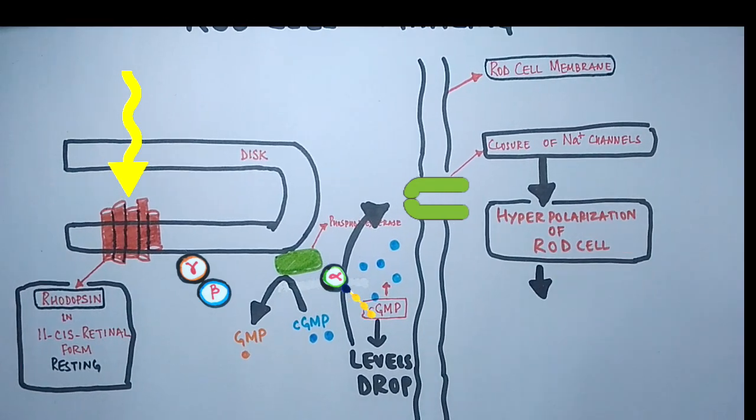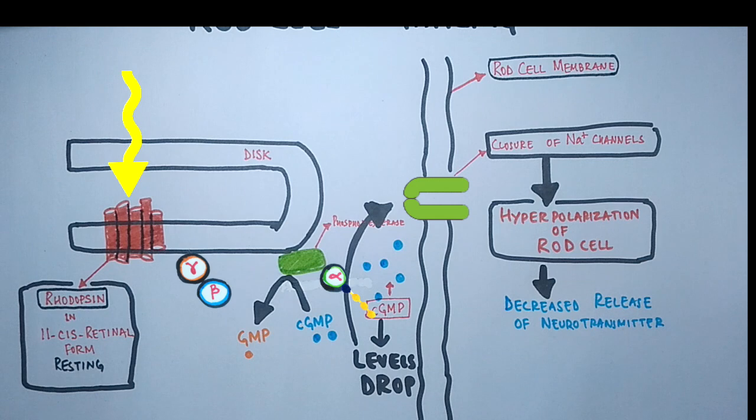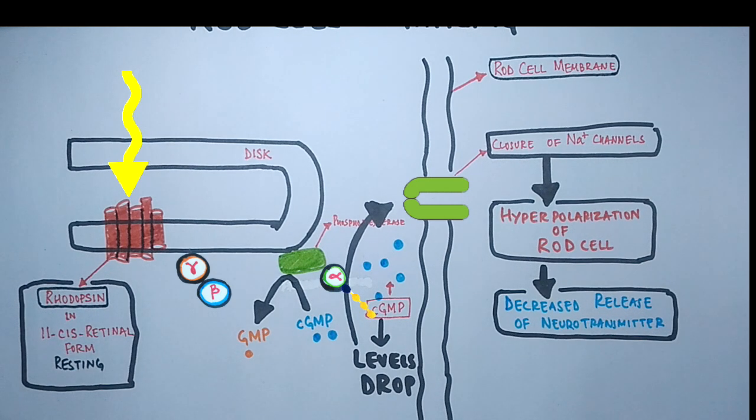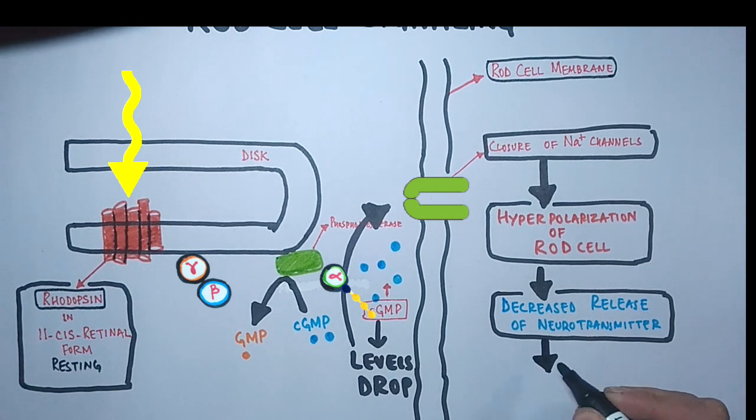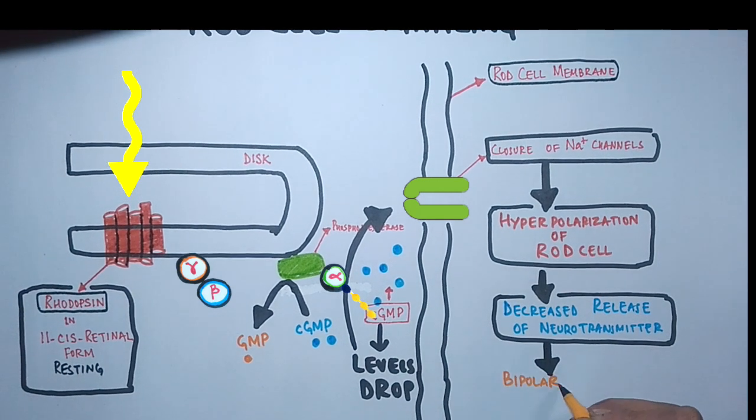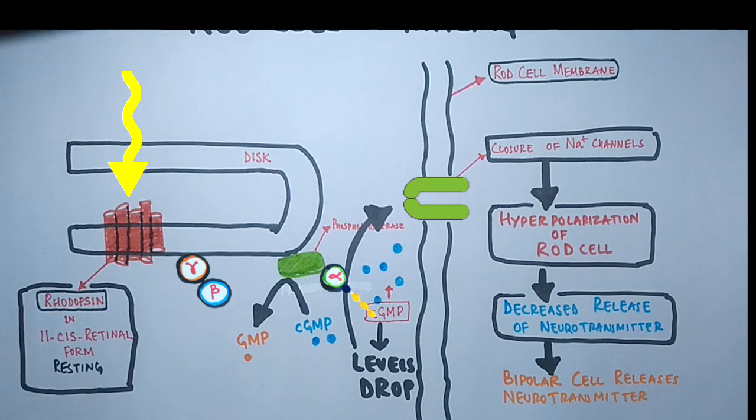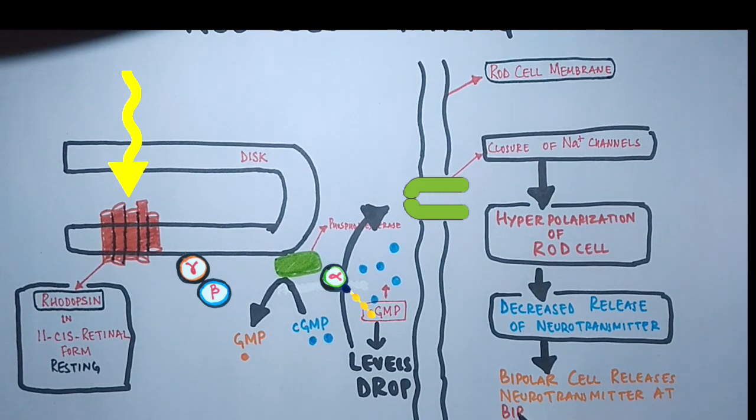This leads to decreased release of neurotransmitter at synaptic terminal. A decrease in the amount of glutamate neurotransmitter released by the photoreceptors causes depolarization of bipolar cells, which leads to release of neurotransmitter at bipolar ganglion synapse.